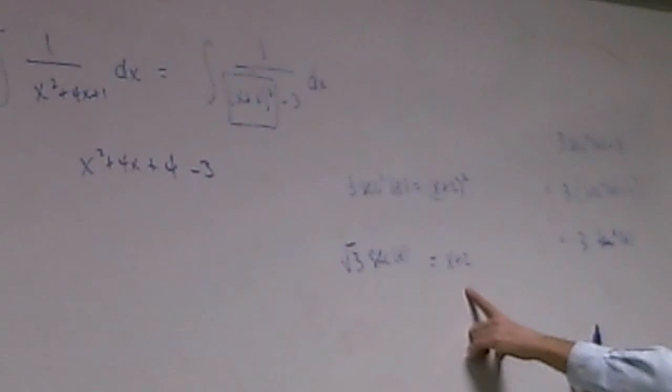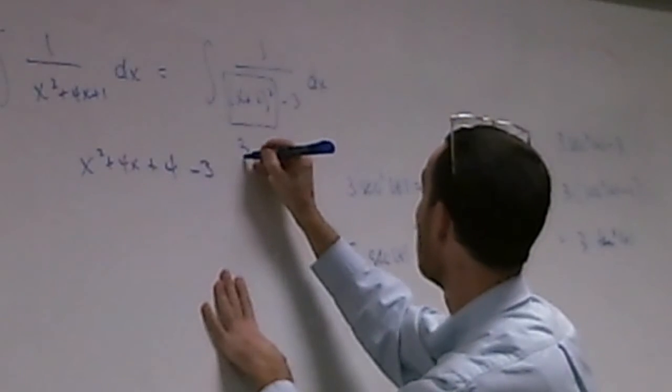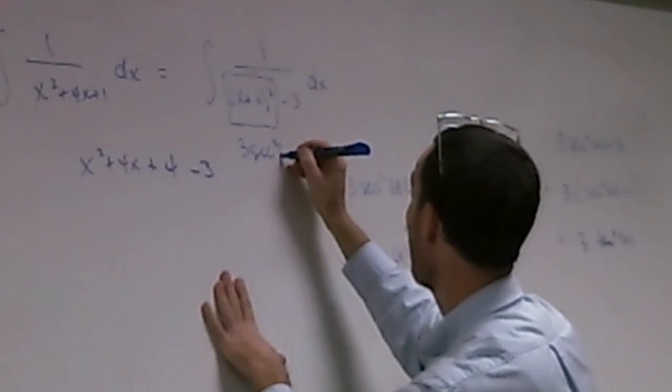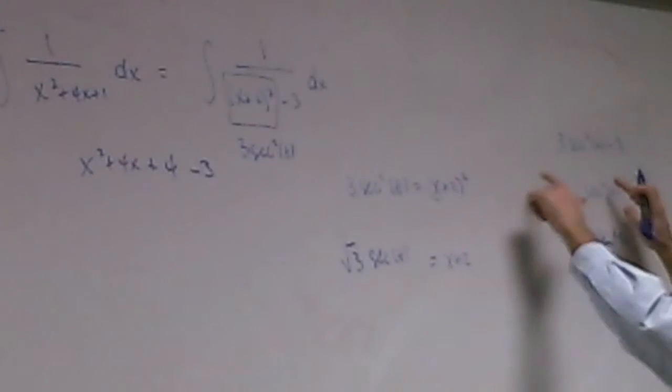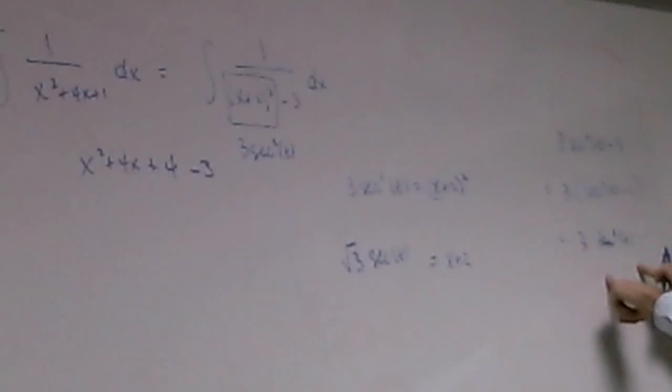So when you, when I square the x plus 2 squared, what I replace this part with must be 3 secant squared of t, so that I have 3 secant squared of t minus 3. So I can factor the 3 out so I can use the Pythagorean identity, right? Okay.